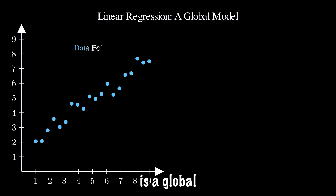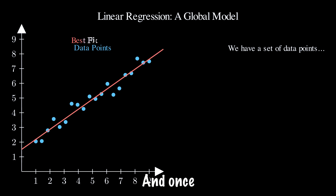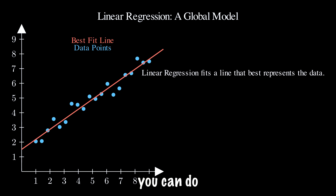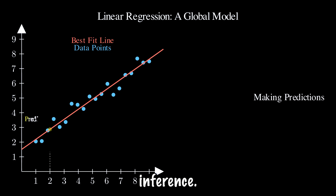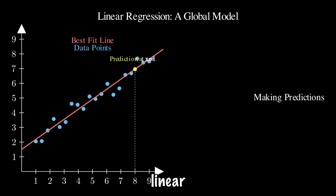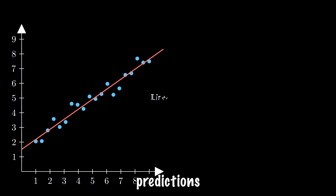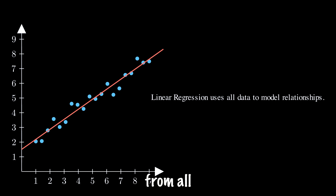Unlike KNN, linear regression is a global model because it considers the full set of data points in order to come up with the best fit line. Once you have the best fit line, you can use it to do inference. Given a new data point, you can use the best fit line to find the value of Y. Linear regression is a global model because it makes predictions based on contributions from all the data points.